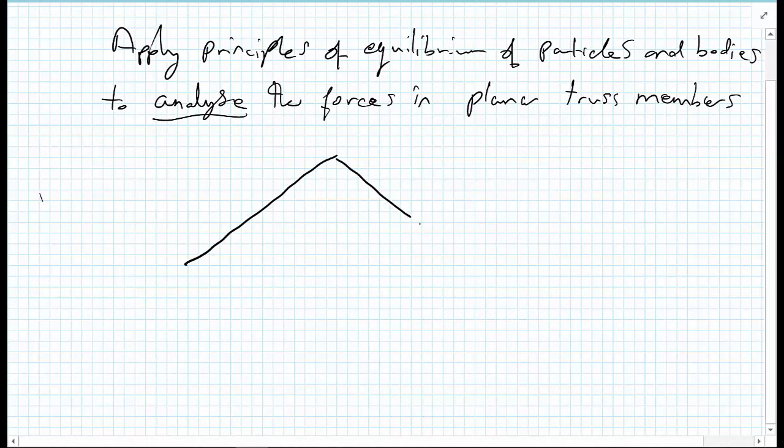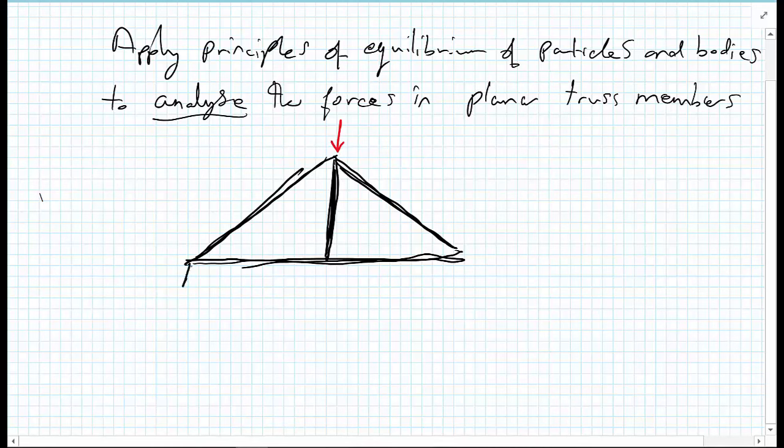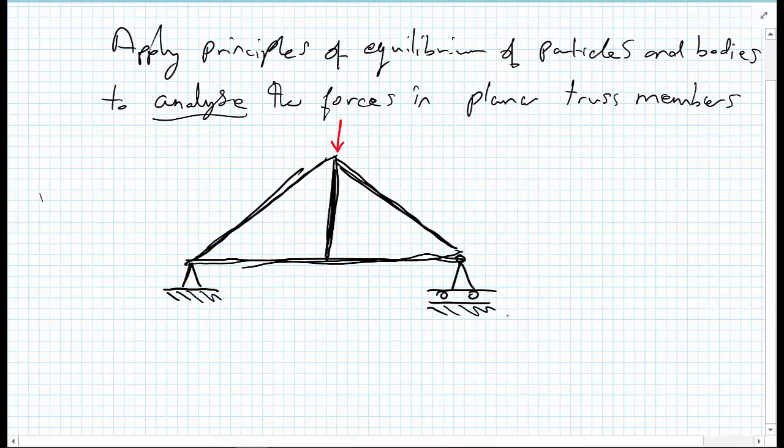So we have something that looks like a bridge, and it's made up of bar members. If I was to put a loading on the top of here and maybe I was going to support this bridge as well, we'll have a pin support down at this left-hand side and a roller support on this right-hand side. This is what we would call a truss structure.